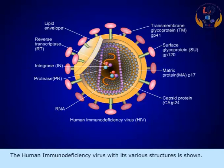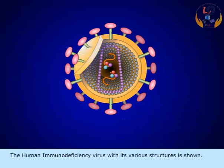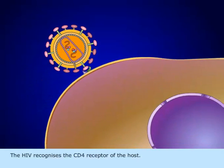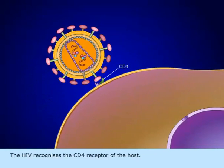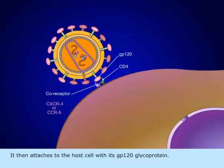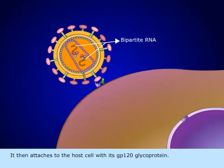The human immunodeficiency virus with its various structures is shown. The HIV recognizes the CD4 receptor of the host, then attaches to the host cell with its GP120 glycoprotein.